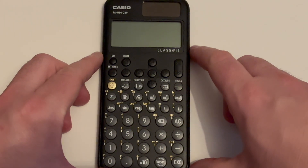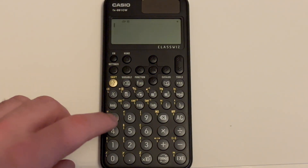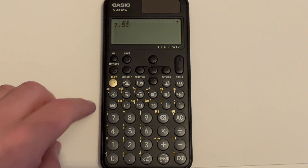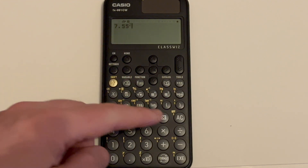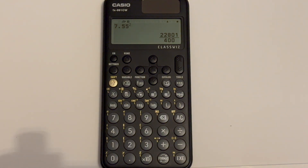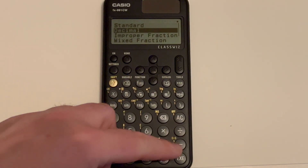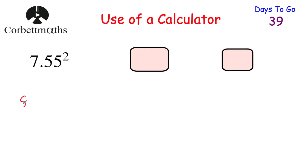If you've got a different model of calculator and you want to work out 7.55 squared, turn it on and press 7.55. The squared button on this one is a little white square with a squared above it. Press that, then press equals or EXE. Again it may come up as a fraction; if you want a decimal, press the format button, then press down, select decimal, and press EXE again. That gives you 57.0025.